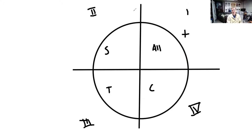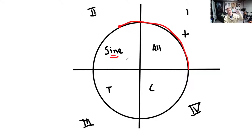In quadrant 2, the S stands for Sine. In quadrant 2, the y-coordinate is positive and the x-coordinate is negative. So tangent, which is y over x, is negative. The reciprocal of cosine — secant — is negative. The reciprocal of tangent — cotangent — is also negative. Only sine and its reciprocal cosecant are positive for terminal points in quadrant 2.